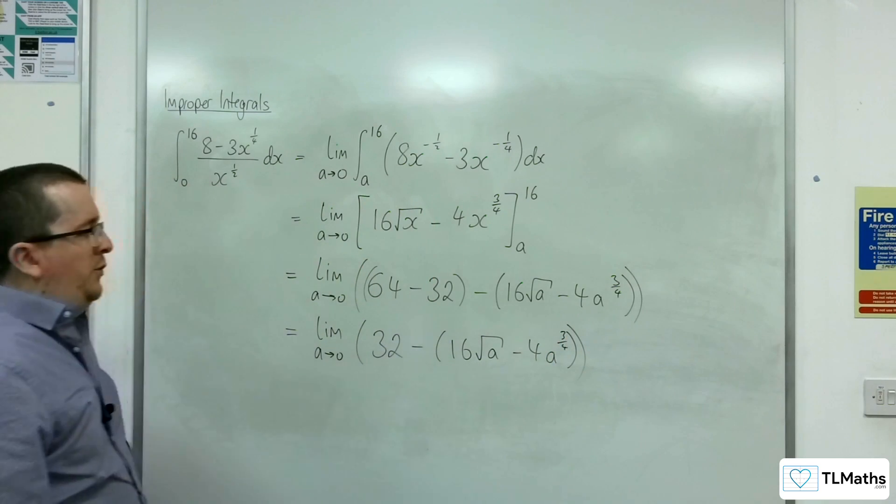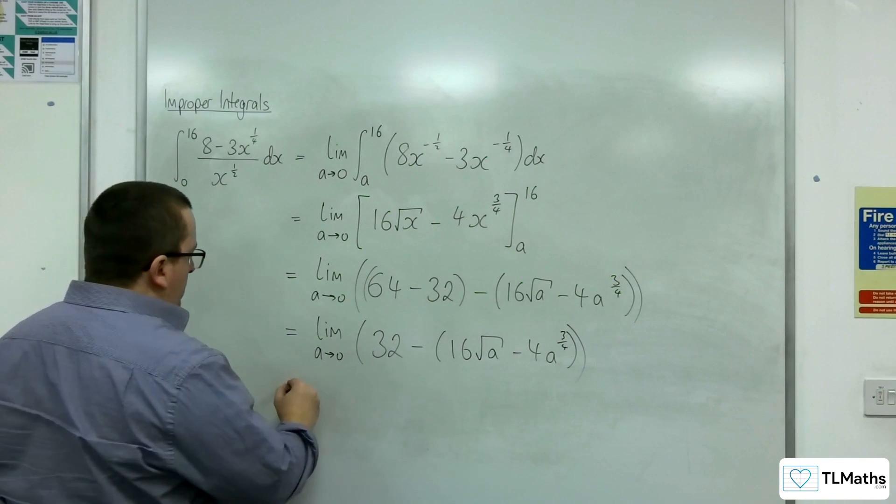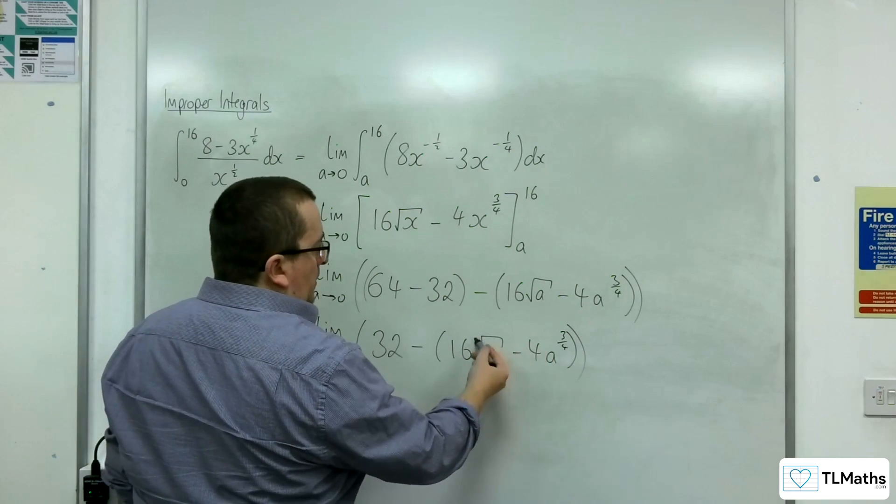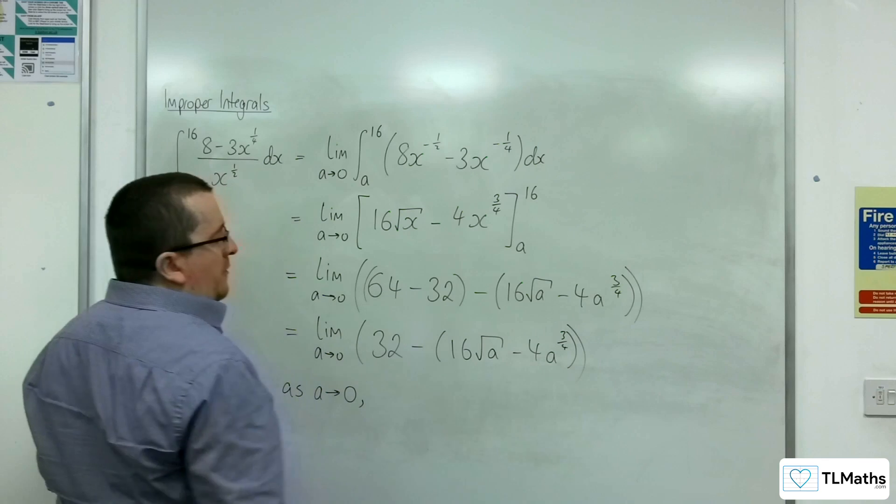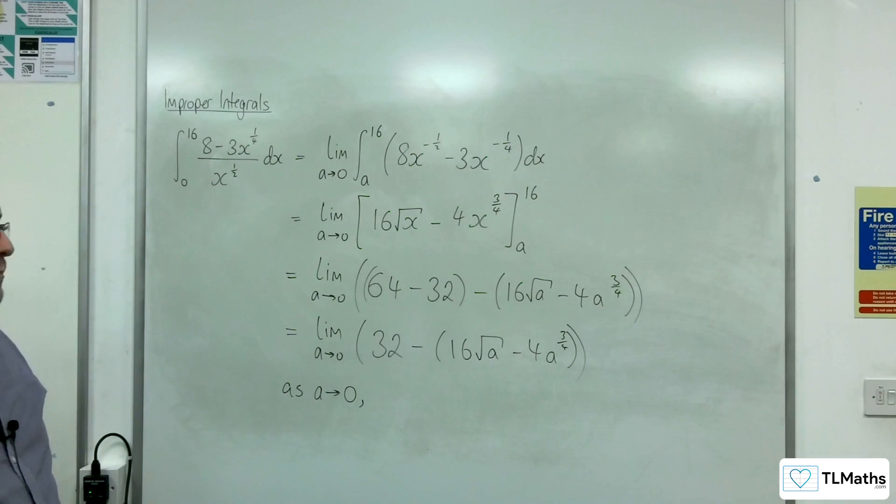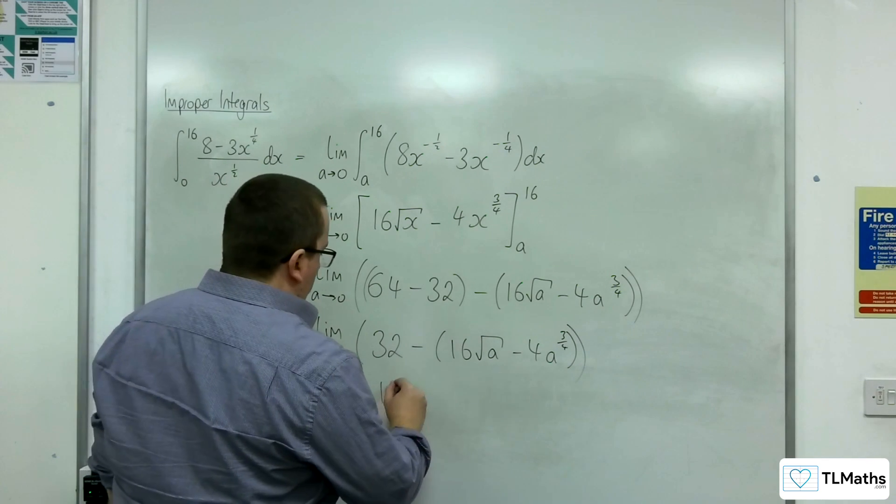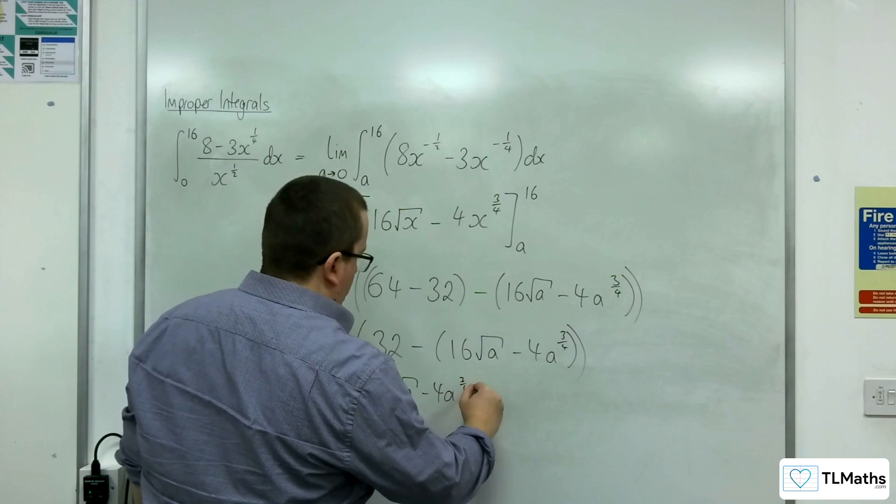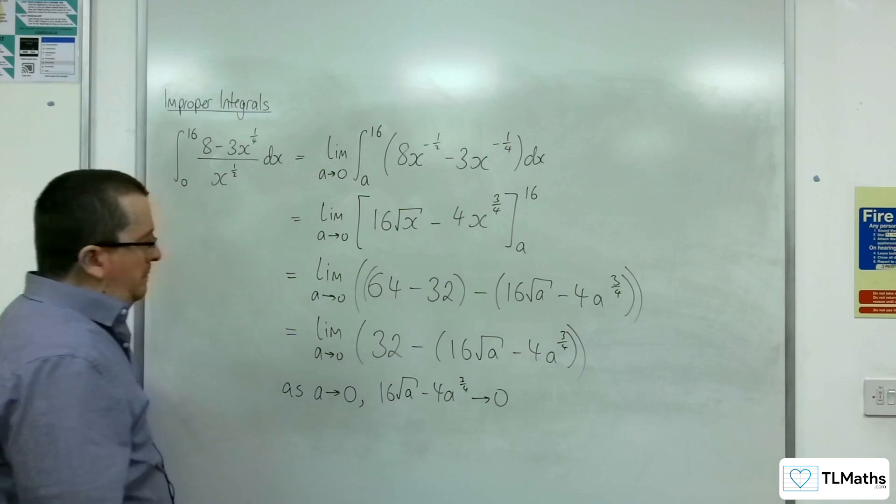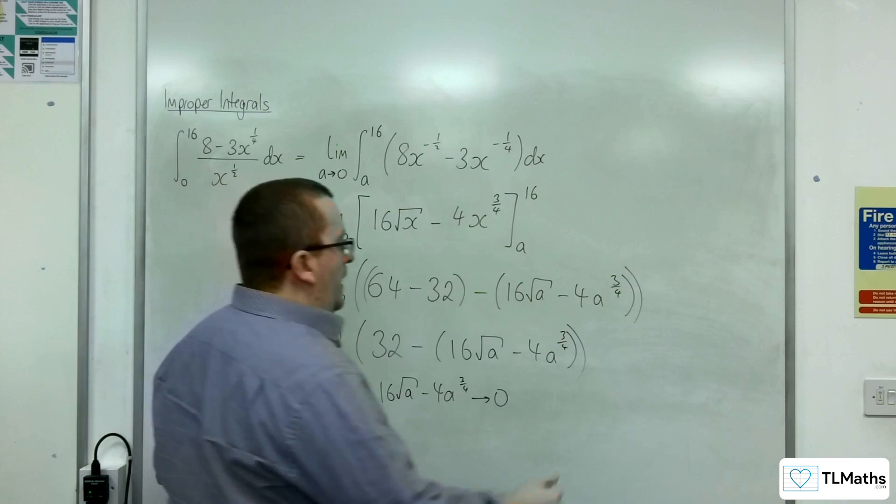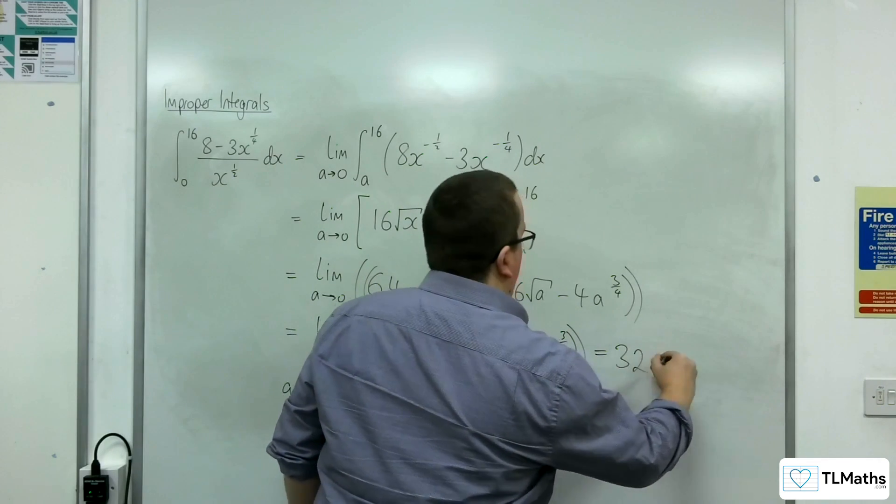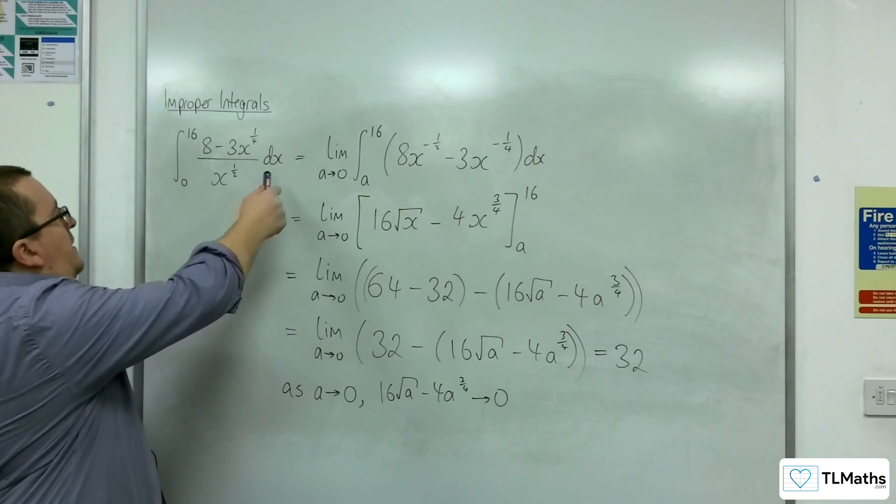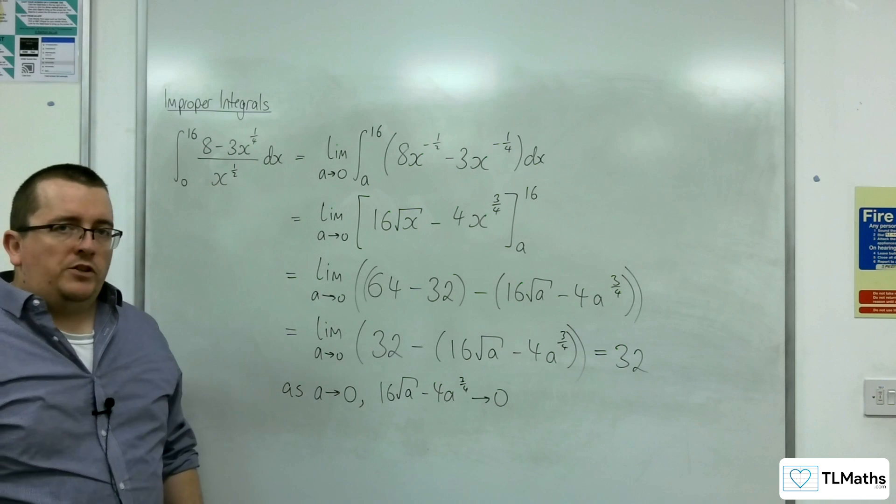But it leaves us to identify that as a tends to 0, this term, the 16 root a, and the 4a to the 3 quarters, both tend to 0 as well. So 16 root a, take away 4a to the 3 quarters, tends to 0. And so the integral actually converges to 32. And so 32 is the value of this original integral.